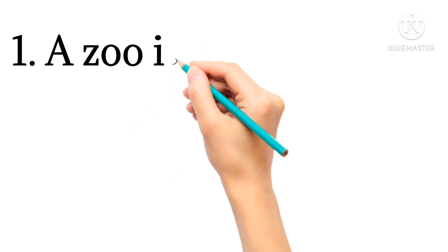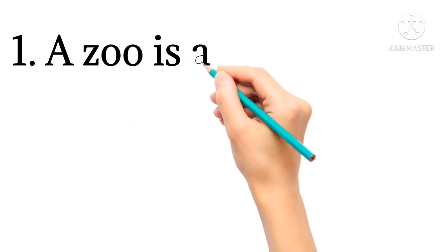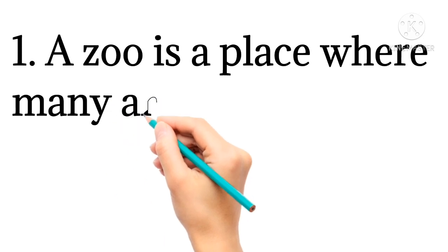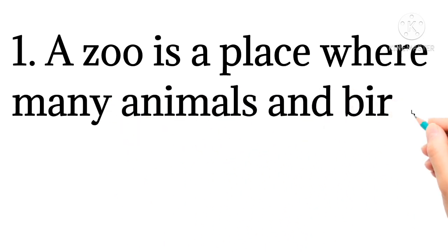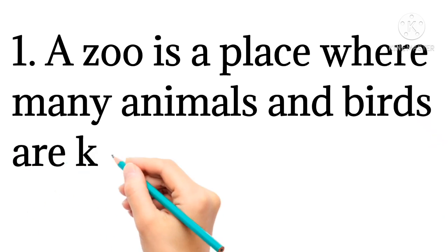First, a zoo is a place where many animals and birds are kept.